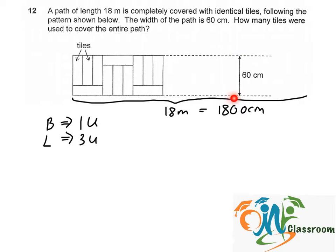And let's look at this 60 cm. 60 cm is one length and one breadth. So one length plus one breadth equals 60 cm. The length is three units, the breadth is one unit, so that gives us four units equals 60 cm.